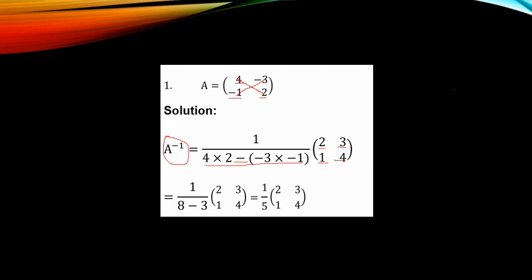Simplifying the determinant: you have 4 times 2, which is 8, then minus minus 3 times minus 1, which is plus 3. So 8 minus 3 is 5. You have 1 over 5 multiplied by the matrix. This is the determinant, and this is the inverse of the matrix.